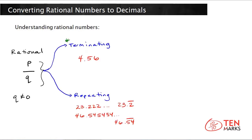For a terminating decimal, you have a fixed number of digits. Notice here that after the digit 6, the number does not continue on, and this is a good example of a terminating decimal.